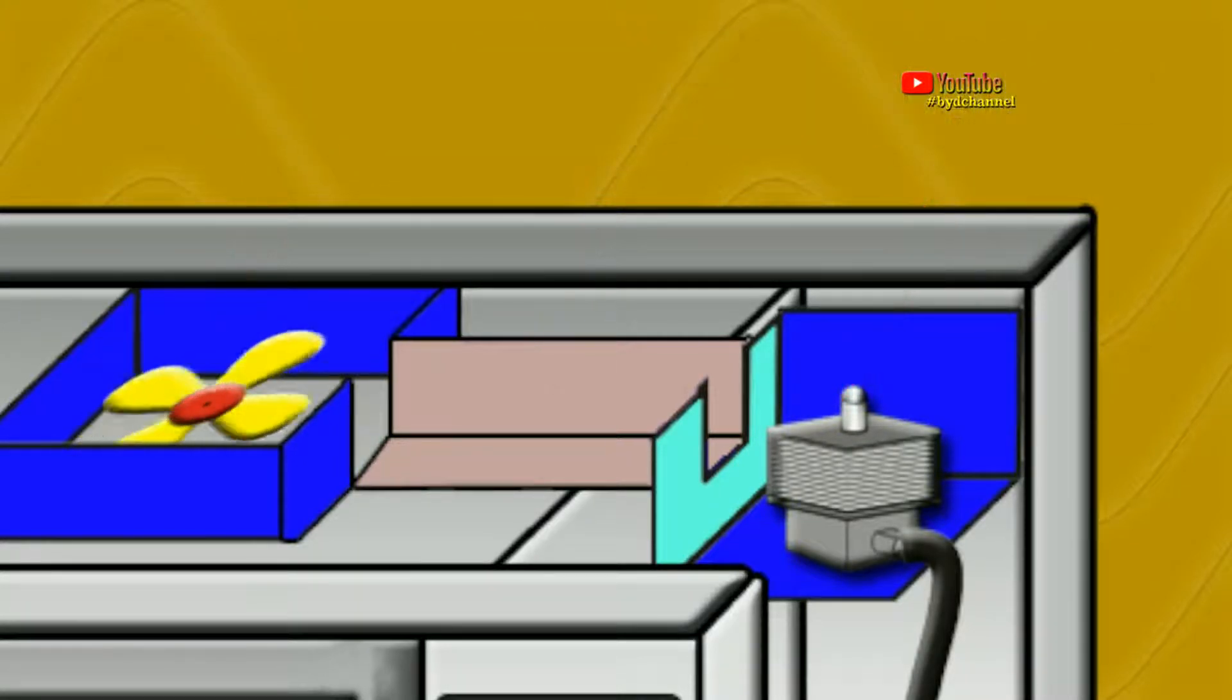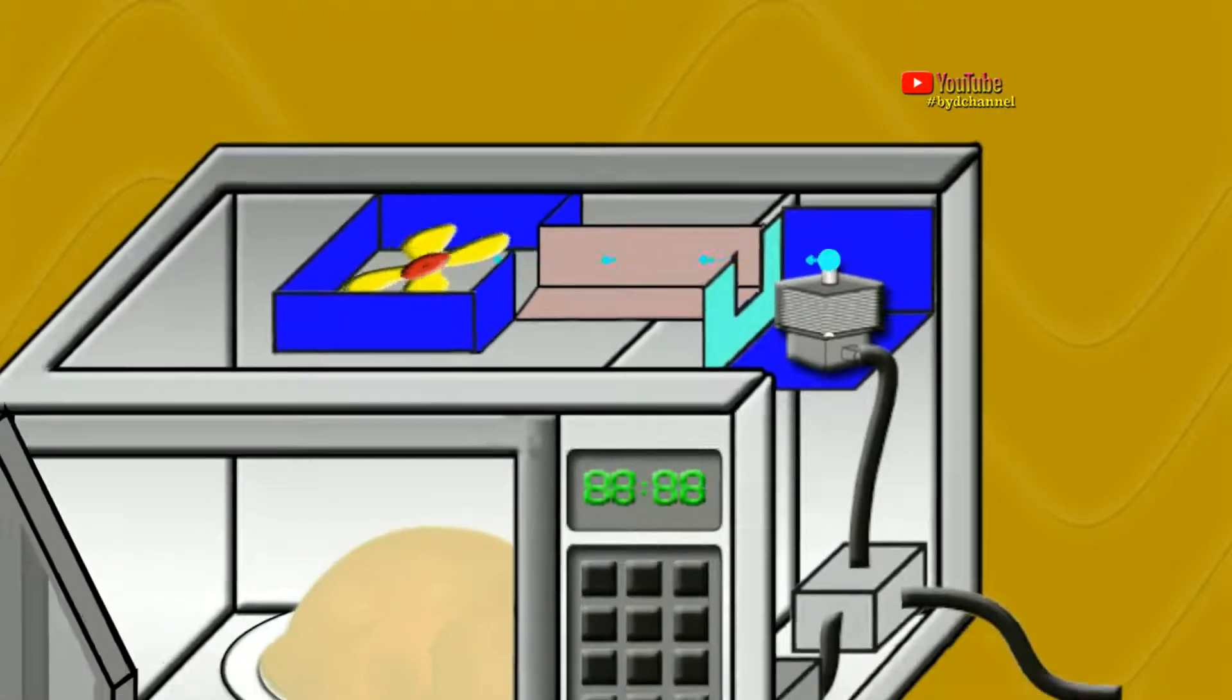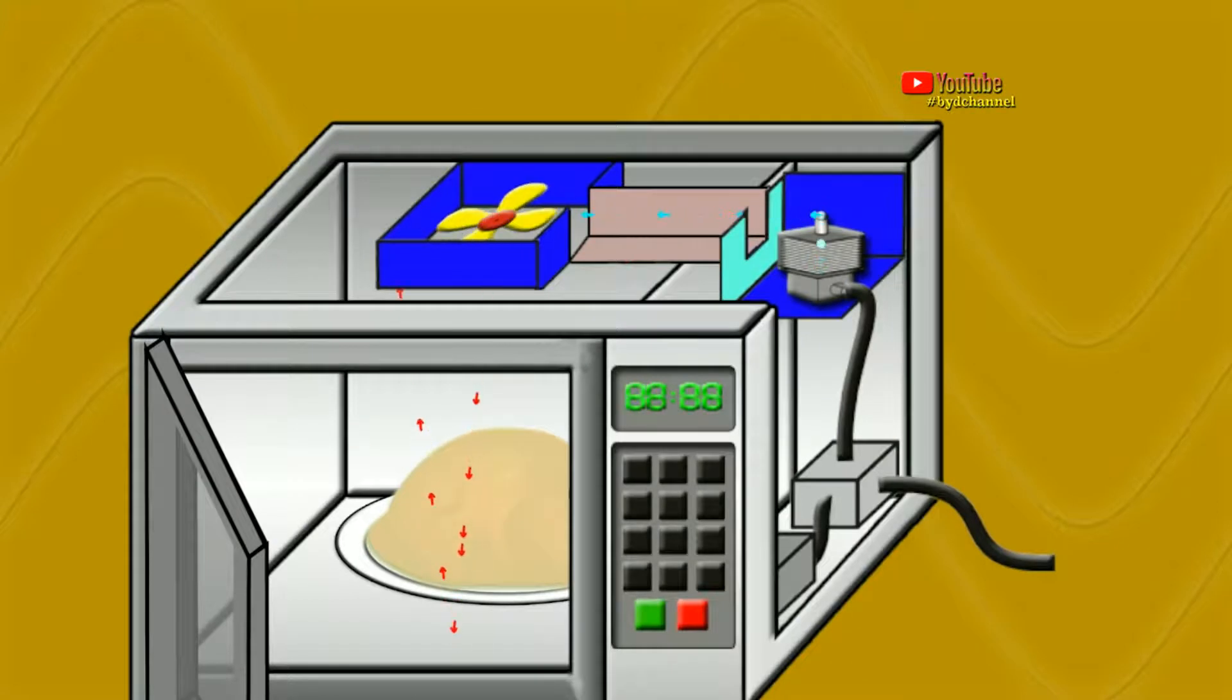How does it work when cooking in a microwave? Magnetron converts current to produce microwaves. Then the microwaves will be directed by the antenna at the top of the magnetron into the waveguide. The waveguide then transmits microwaves to a fan-like device called the stirrer. The stirrer then spreads microwaves in the oven chamber.